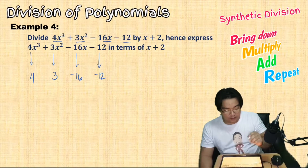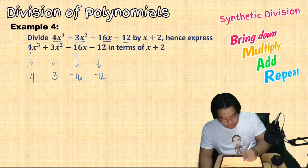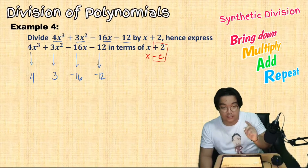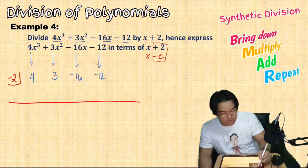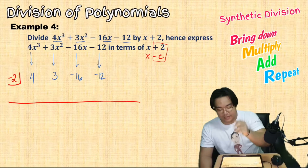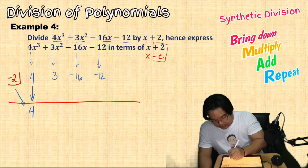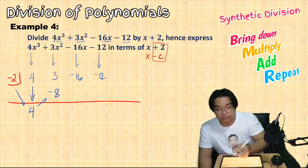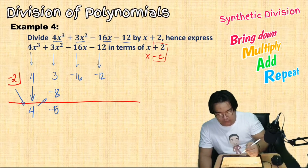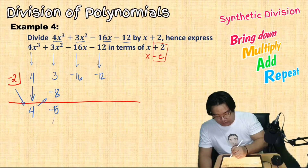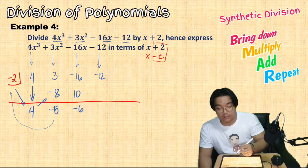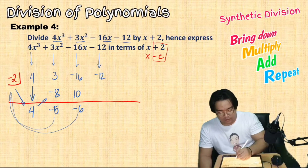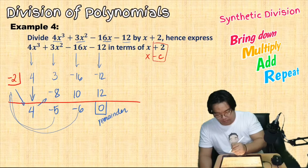Since the divisor is x plus 2, which is x minus C, our C is negative 2, so the synthetic divisor is negative 2. Bring down 4; multiply 4 times negative 2 is negative 8; add 3 plus negative 8 is negative 5. Multiply negative 5 times negative 2 is 10; add negative 16 plus 10 is negative 6. Multiply negative 6 times negative 2 is 12; add negative 12 plus 12 gives remainder 0.